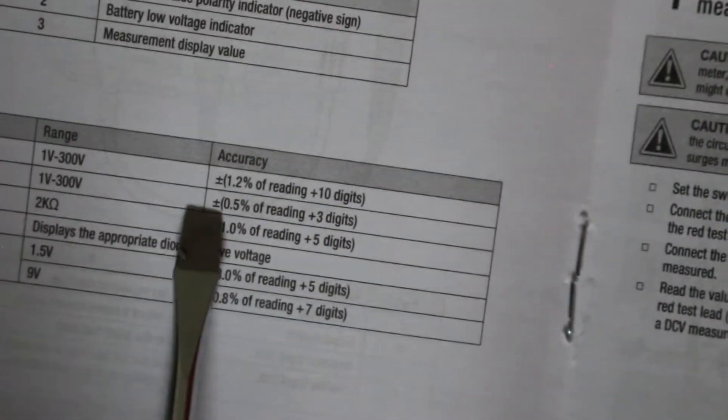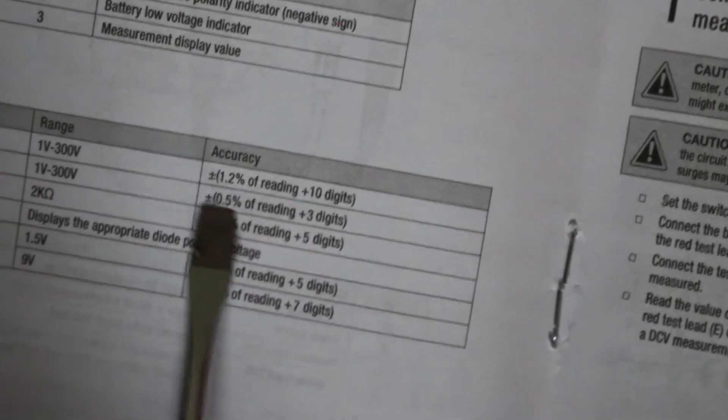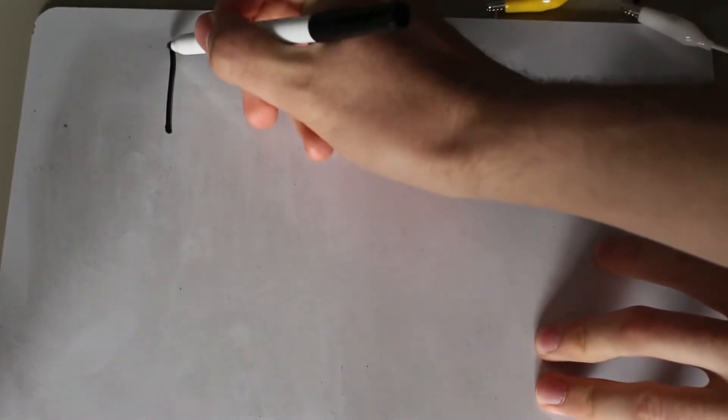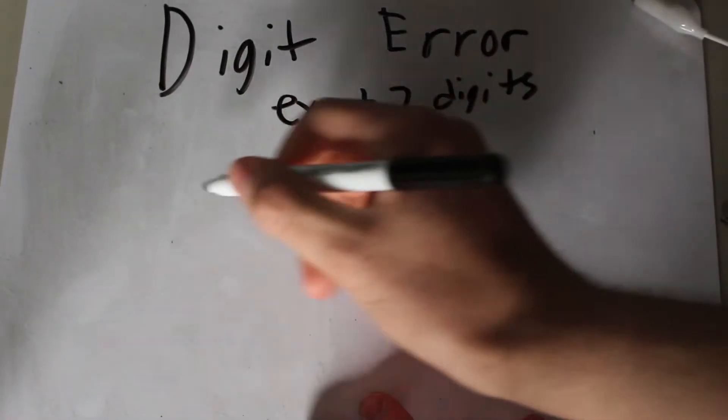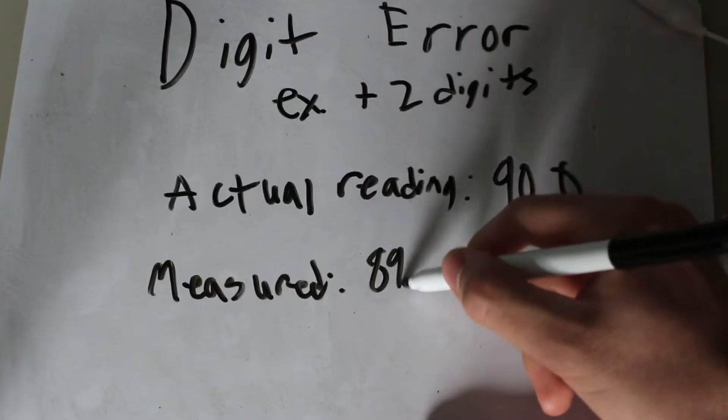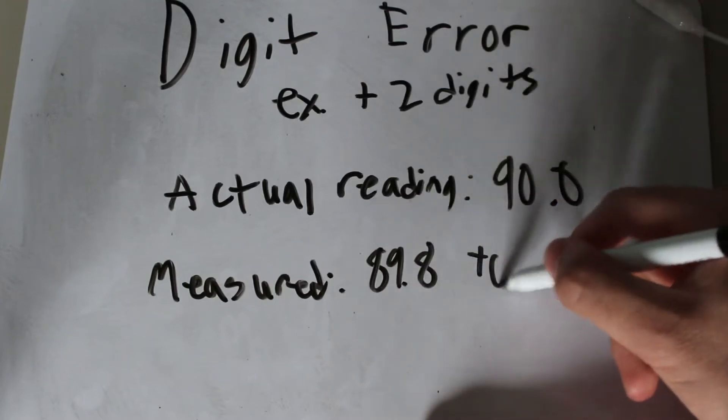Also keep in mind the extra error expressed in digits, which can be found as a plus symbol next to the error. This basically means that the last digit may vary in either direction by at most that many. So a meter with a two digit error could read anywhere from 89.8 to 90.2 from a 90 volt input.